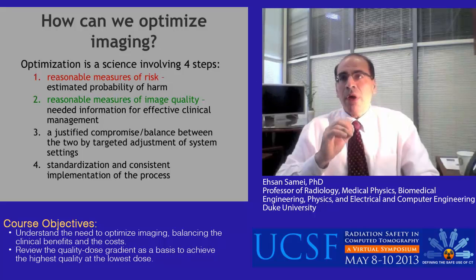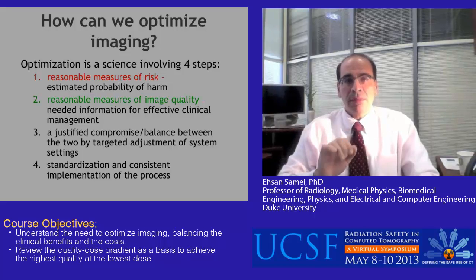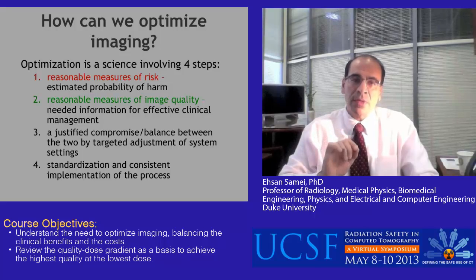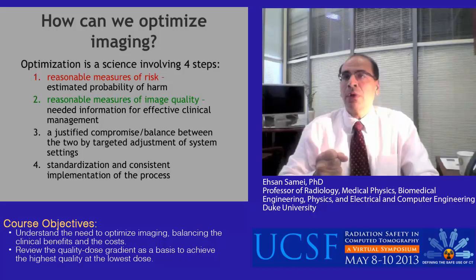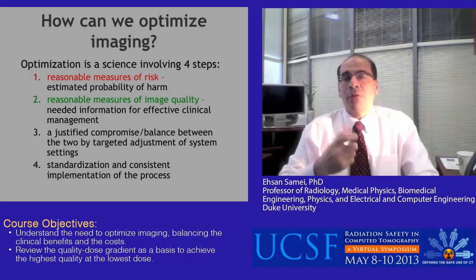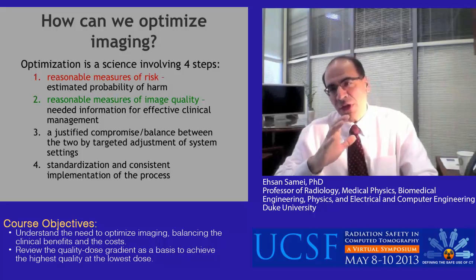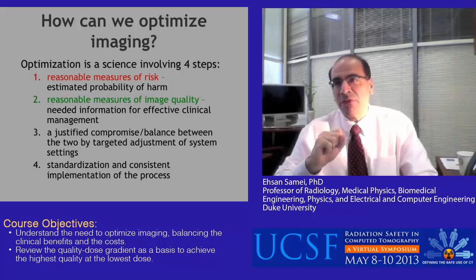Doing imaging properly requires an optimized approach in balancing image quality with radiation dose. Optimization is a science that involves four specific steps. First, if there is a harm associated with the imaging, we need to have reasonable measures of the risk involved. Of course, if there is no harm, there is no reason to do the optimization. But if there is a finite amount of harm, we need to have reasonable measures of that.